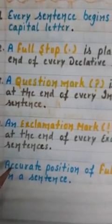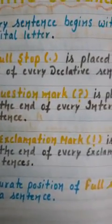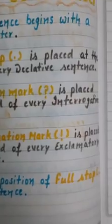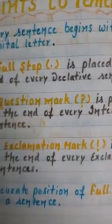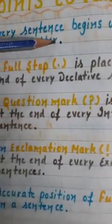One more thing — a common mistake students make is the position of the full stop. The full stop is always placed at the end of the sentence, at the foot of the last letter. It should be placed right beside the foot of the last letter of the sentence.